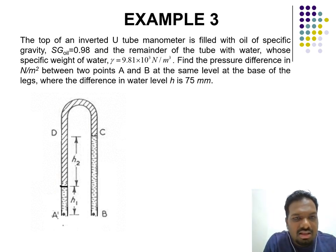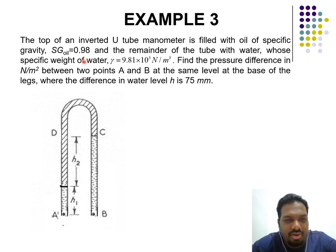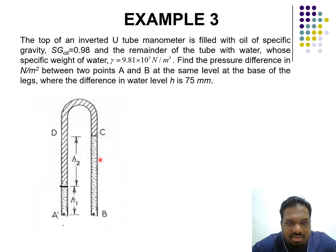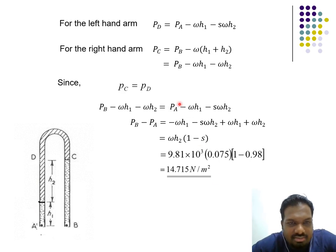Example: the top of an inverted U-tube is filled with oil (specific gravity 0.98). The remaining parts contain water, with specific weight gamma equals 9.81 × 10³ N/m³. We are asked to find the pressure difference between A and B. Even though they appear to be at the same height, the additional material inside means the values can be different. All height values are given.